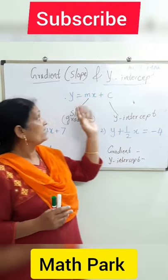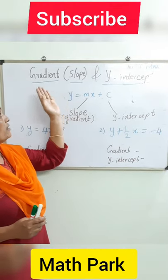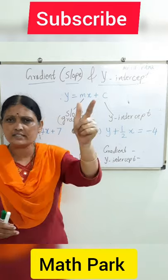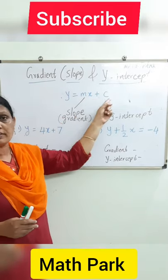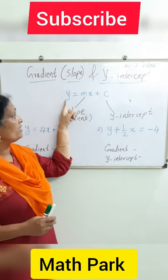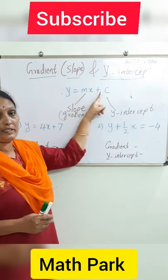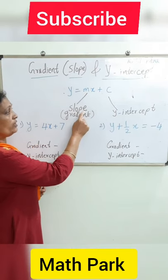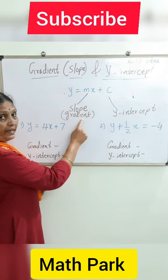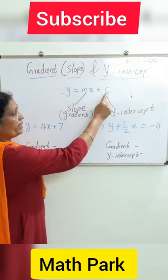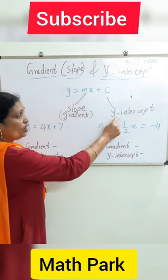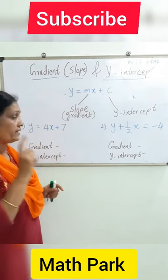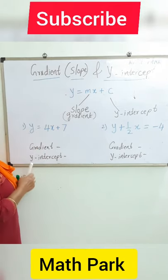Hello children, let's understand how to find a slope or gradient and y-intercept just in seconds. You are given an equation of a line. This is the general equation: y is equal to mx plus c, where the coefficient of x, m, is called a slope or gradient, and c is called the y-intercept — it is the point where the line intersects the y-axis.